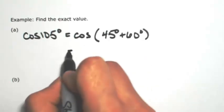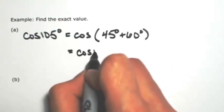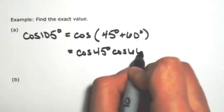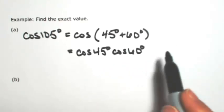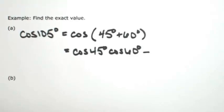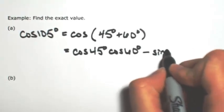So then expanding this out, cosine, cosine, sine, sine. So cosine of the 45 degrees, cosine of the 60 degrees. Just change the sign, then we do the sine of the first one, sine of the second.